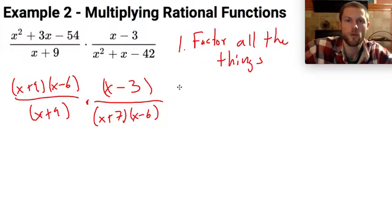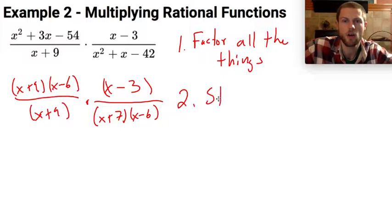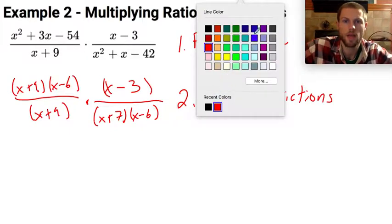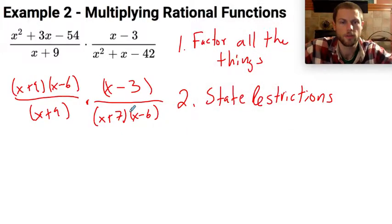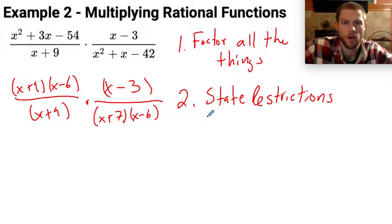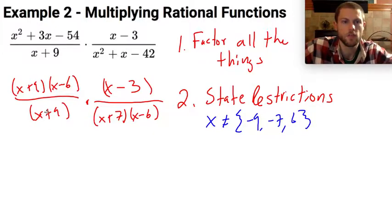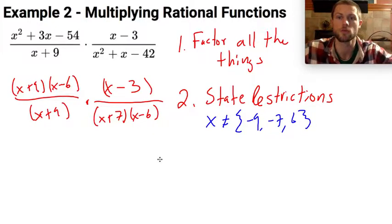And then just like before, now that we factored everything, let's state all restrictions. So in this case, my restrictions would be that x cannot equal, let's see, what would make the denominators equal 0? I've got a denominator here. I've got a denominator here. x cannot equal the set of numbers negative 9, negative 7, and 6. Setting each of these factors equal to 0 gets me those domain restrictions.